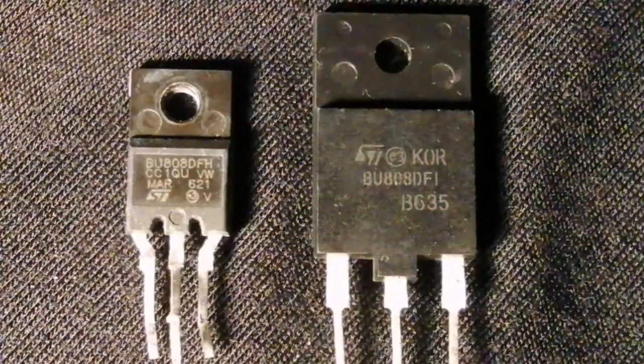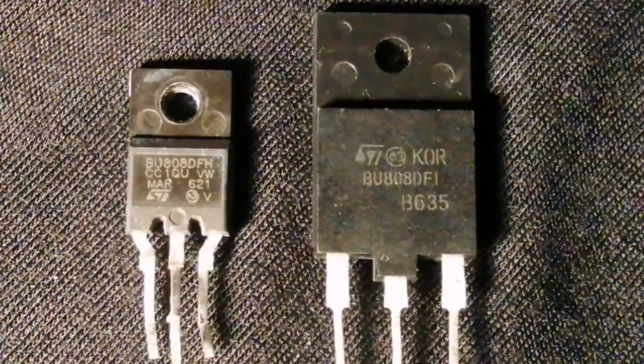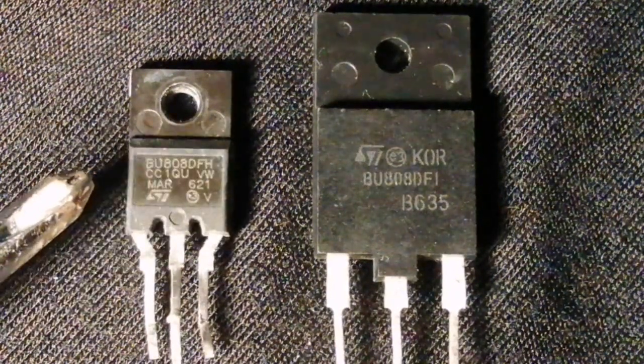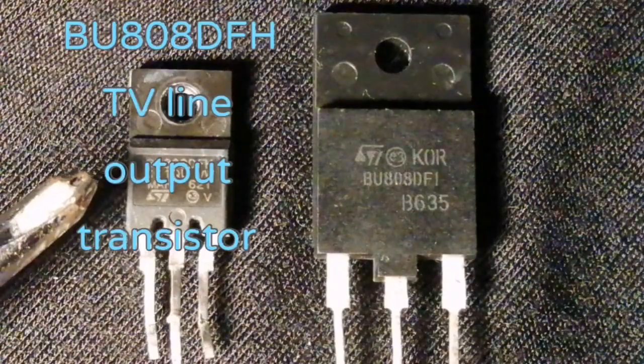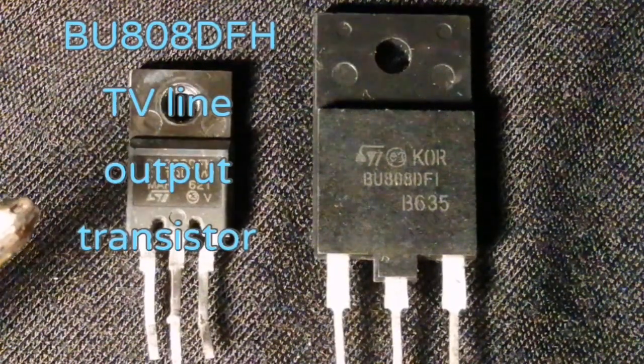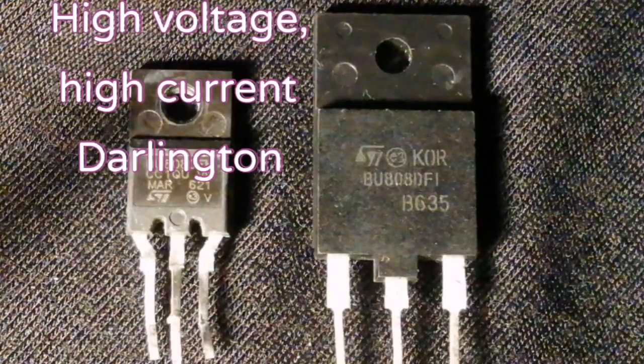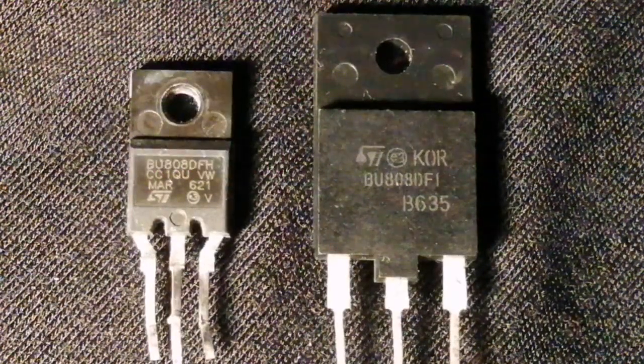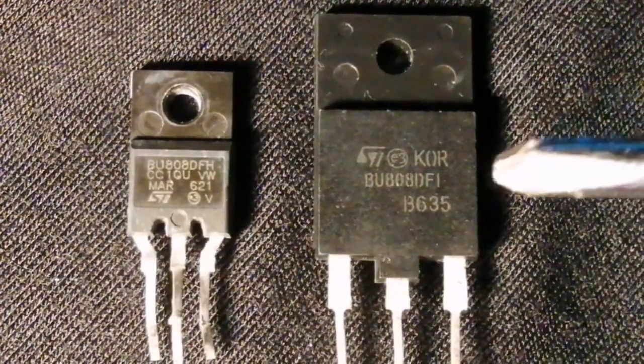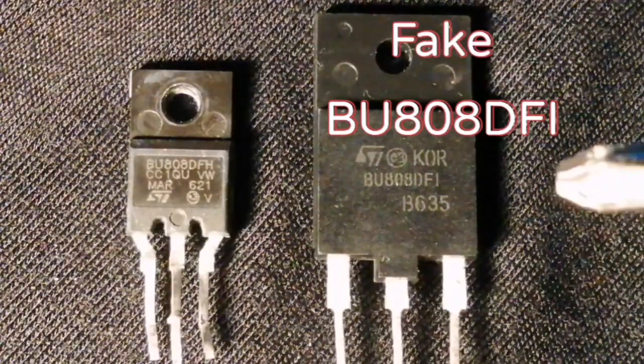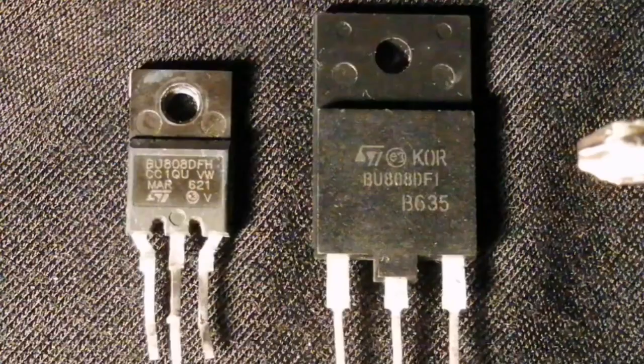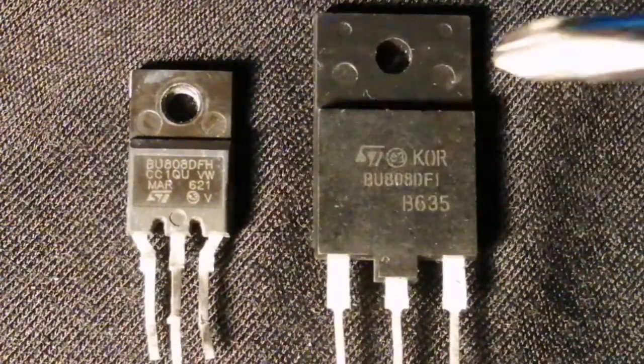I suppose this should have been a bit of a giveaway, but it wasn't obvious from the picture on eBay. This is the genuine transistor, a BU808DFH line output transistor, high voltage for small tellies. And this on the right is the fake. I bought the DFH because it was the closest I could find. You can see the size difference.